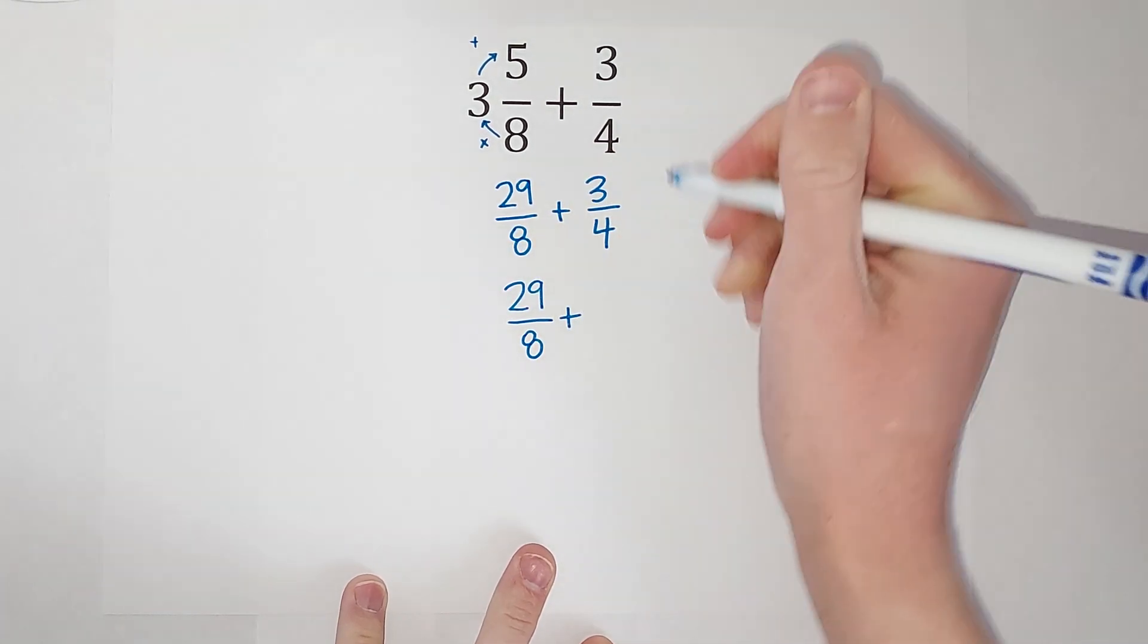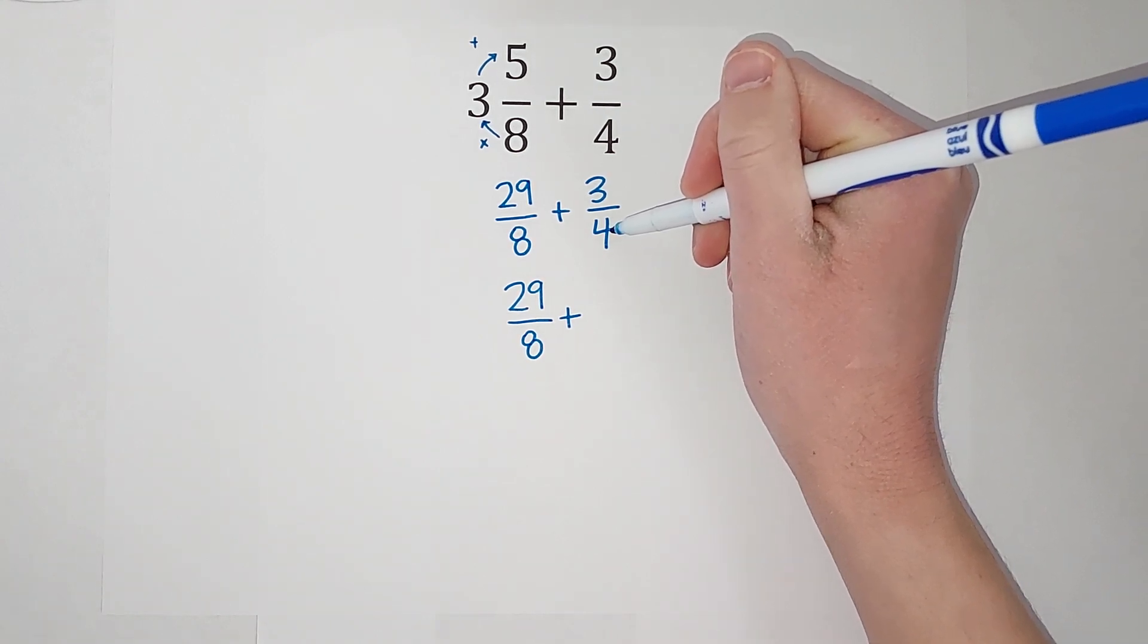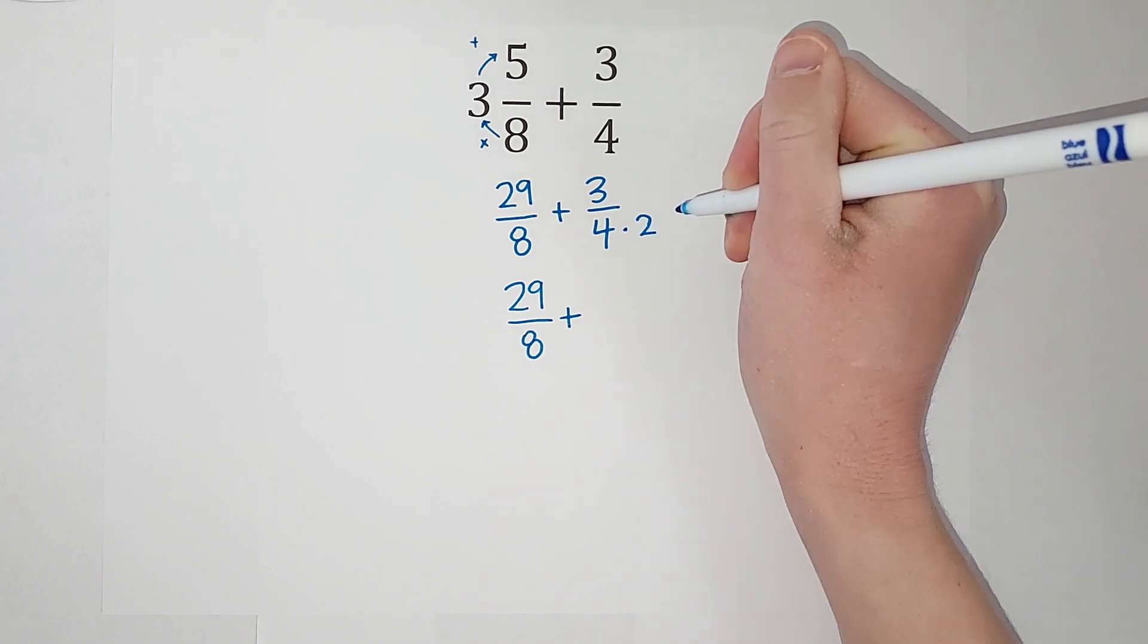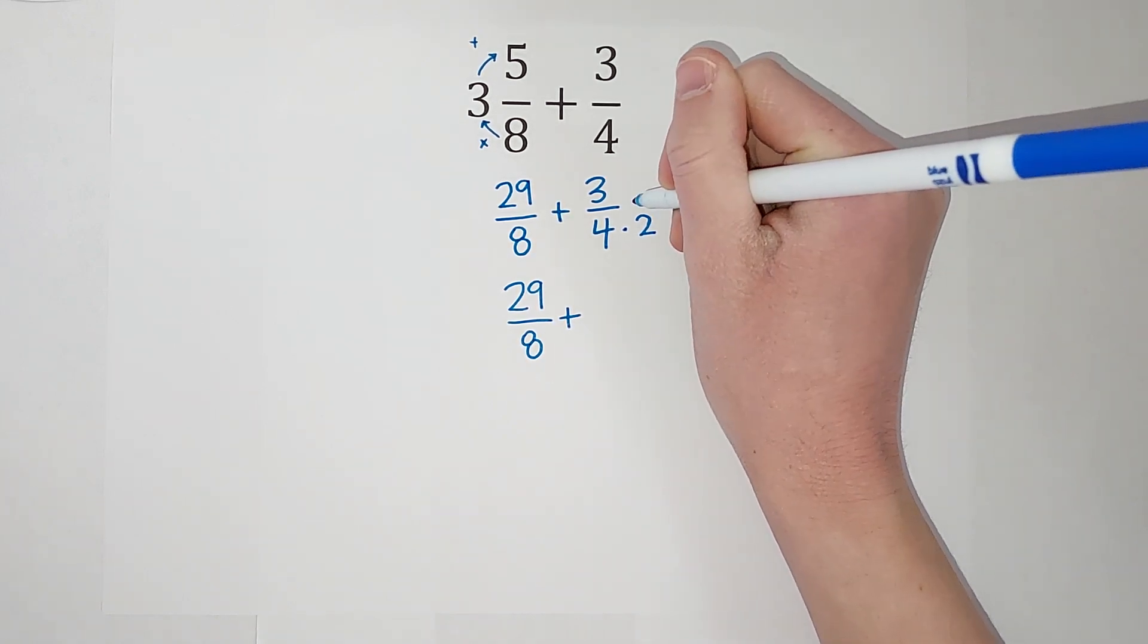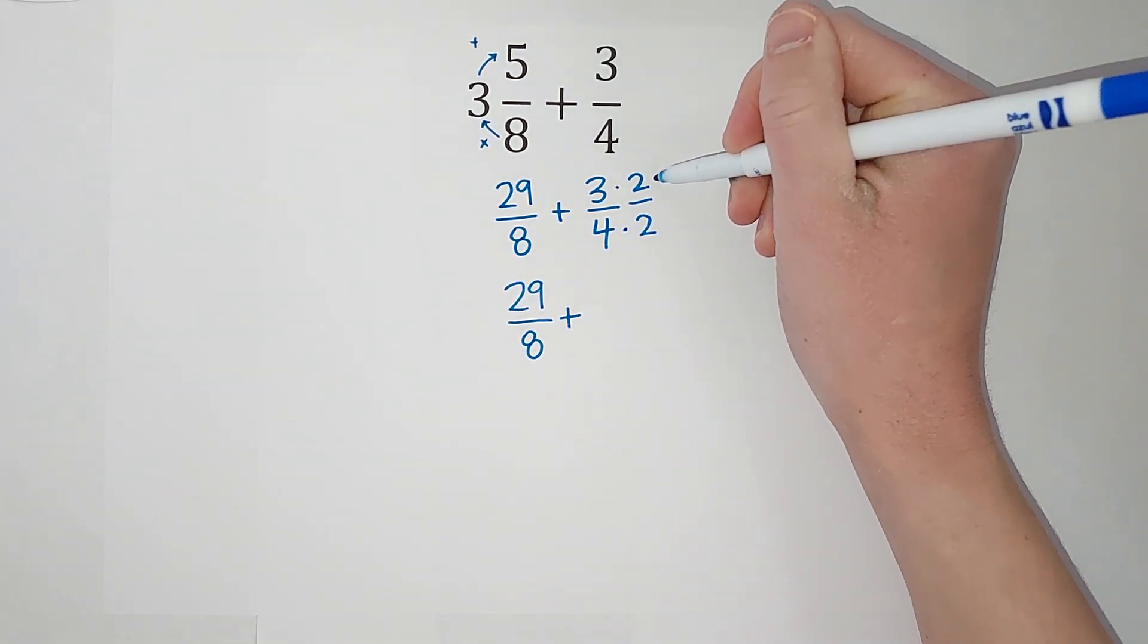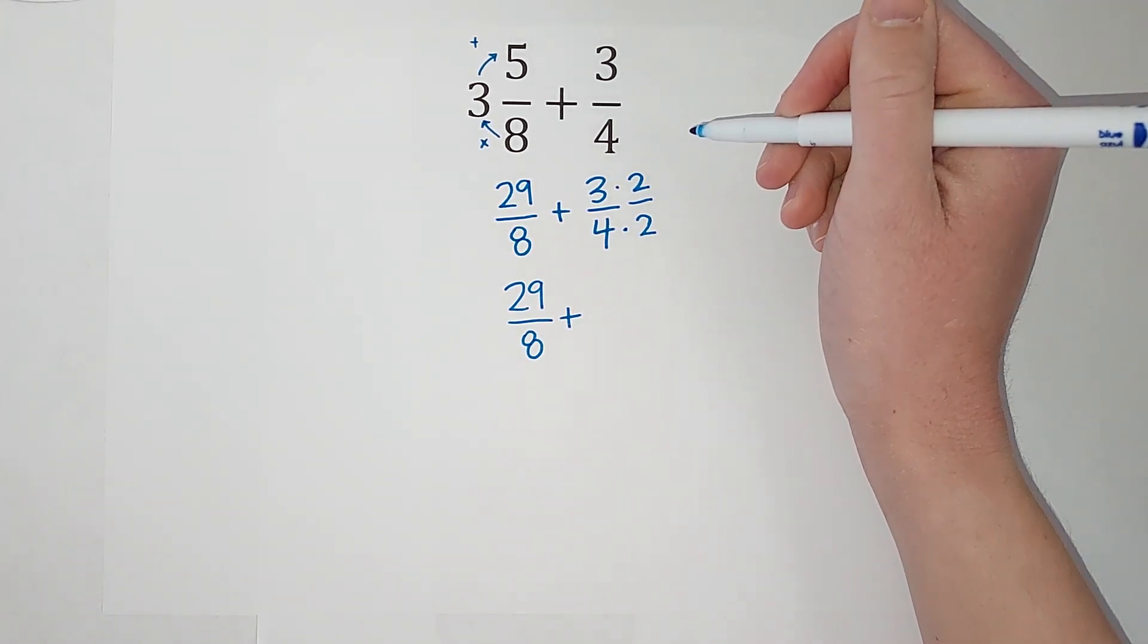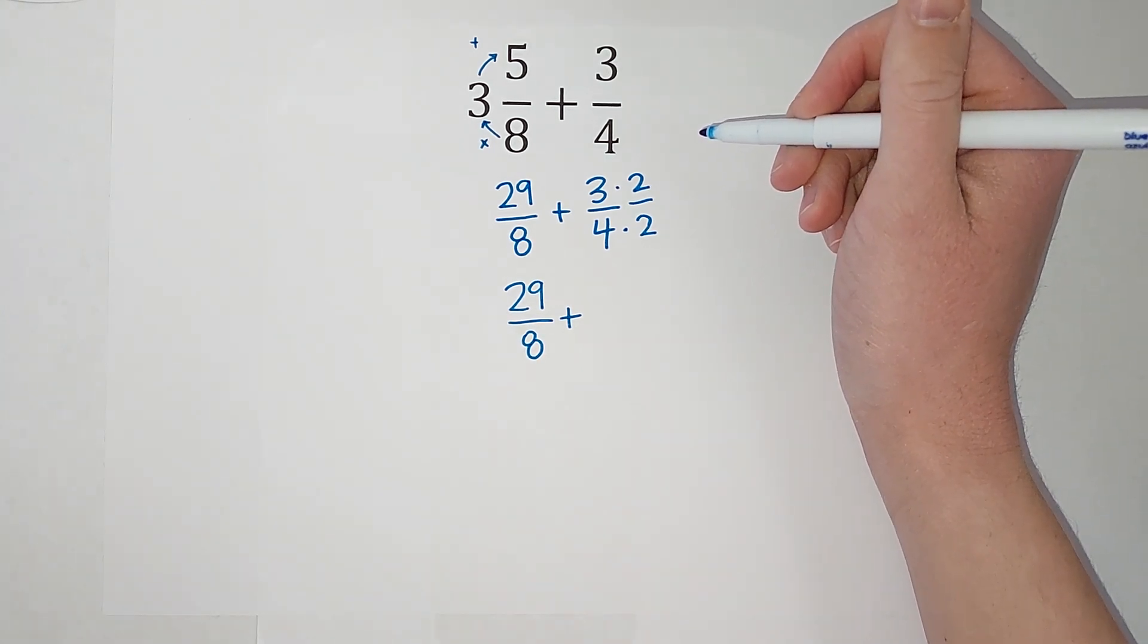All right, now I look at this one and think, what do I need to do to 4 to get it to be an 8? So I multiply it by 2, right. But I can't just go multiplying a denominator by 2 and think it's okay. But what I can do is multiply by 2 over 2, and I can do that because 2 divided by 2 simplifies down to 1, so it's really like I'm just multiplying by 1, it's just a weird looking 1. I'm changing what the fraction looks like but not its value.